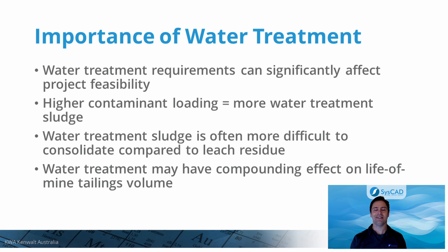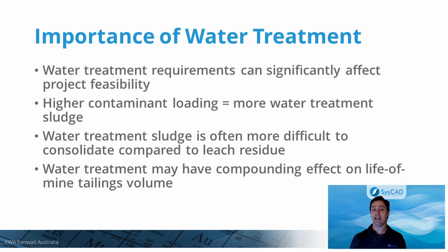Water treatment requirements can significantly affect project feasibility. As contaminant loading in an ore increases, the generation of water treatment sludge is also increased. The sludge generated from water treatment is typically higher in iron, magnesium and calcium, forming precipitates which may be challenging to settle and consolidate. For this reason, water treatment is particularly important to get right, since it may have a compounding effect on life of mine considerations for project feasibility. SysCAD with TCE can provide important information to better understand the life cycle feasibility of a mine.